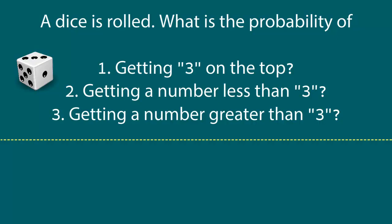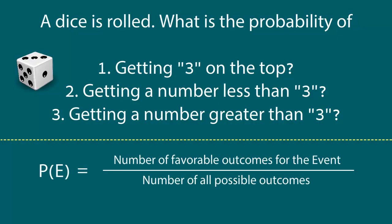When it comes to probability, always remember the most important formula — what is probability and how do we calculate it. The probability of any event P(E) is defined as the ratio of the number of favorable outcomes for the event divided by the number of all possible outcomes. Let's see how it applies in our example.